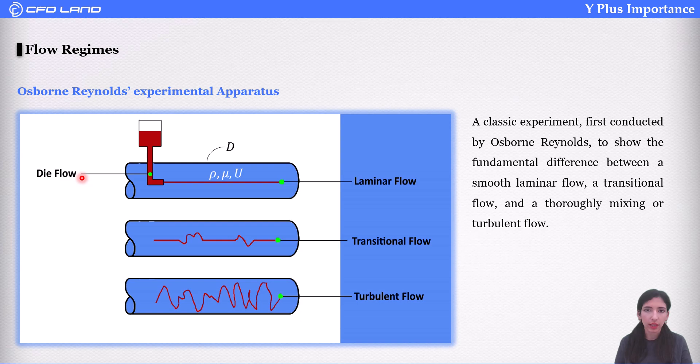Osborne Reynolds conducted an experiment by injecting dye into a pipe flow. The injected dye diffused into the flow in a straight line, showing that the fluid is flowing in smooth layers. This type of regime is called laminar flow. Then velocity was increased. As velocity increased, some fluctuations were observed. This flow is called transitional flow.